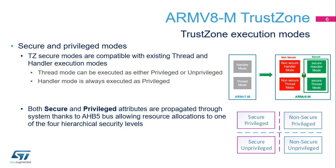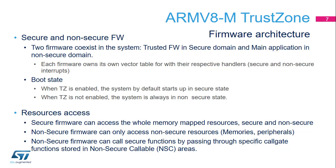Thread and Handler modes support privileged and non-privileged access to memory-mapped resources. The privilege attribute, as with the secure attribute, is propagated at system level through bus architecture. Hence, it is possible to consider four security levels for different parts of firmware, from secure privileged level to non-secure non-privileged level. With TrustZone technology, two domains coexist at runtime, with two firmware binaries — one per domain — each with their own vector tables.